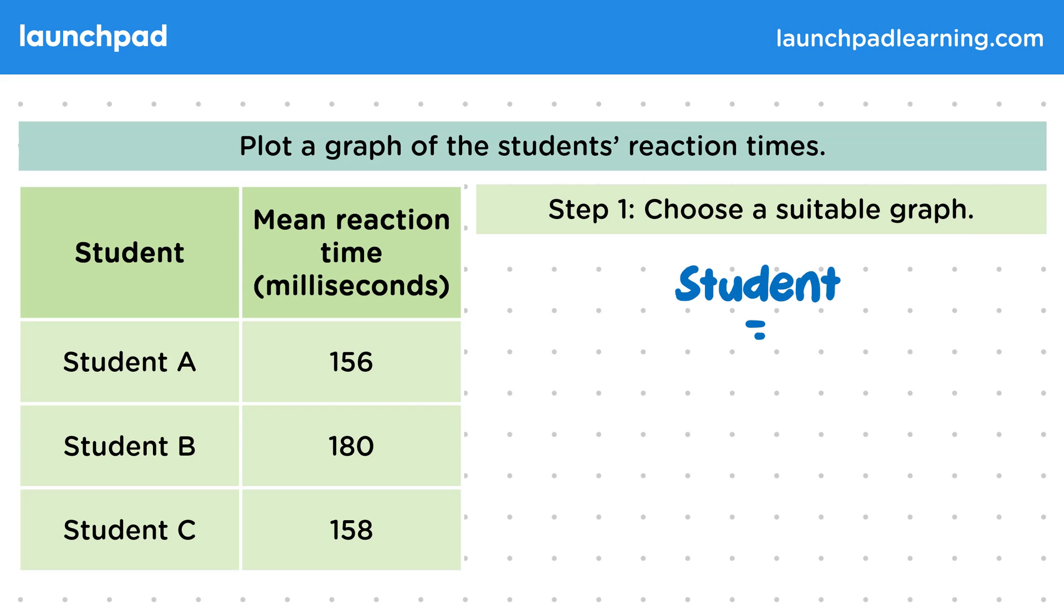So the student is a factor that's a discontinuous variable. Each student, A, B or C, is a category. They can't be put onto a continuous number scale. Therefore, the appropriate graph would be a bar chart.